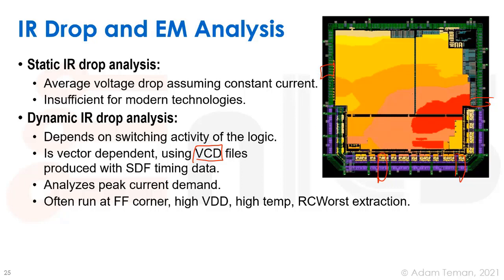We take usually not a long simulation, but try to find a worst-case simulation where a lot of our gates are changing at once. We take the VCD file out of that and plug it back into our power analysis tool, which will show us like a movie of how our IR drop is happening across the chip over that simulation time, showing our peak current demand. You often run it at the fast-fast corner with high voltage, high temperature, and RC worst extraction.